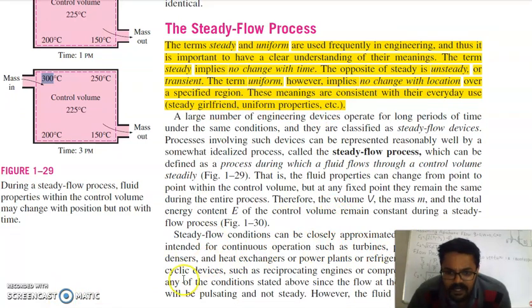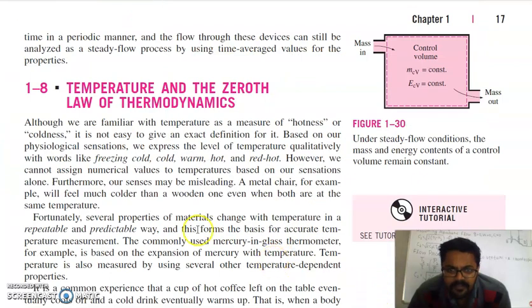Turbines, pumps, boilers, condensers, and heat exchangers in power plants or refrigeration systems are examples of steady-flow conditions. Cycling devices such as reciprocating engines or compressors do not satisfy any of the conditions stated above, since the flow at inlet and exit will be pulsating and not steady. However, the fluid properties vary in time in a periodic manner, and the flow through these devices can also be analyzed as a steady-flow process by using time-averaged values for these properties.